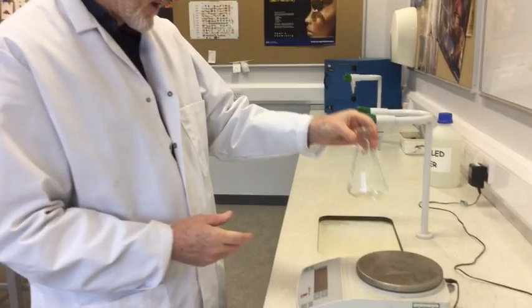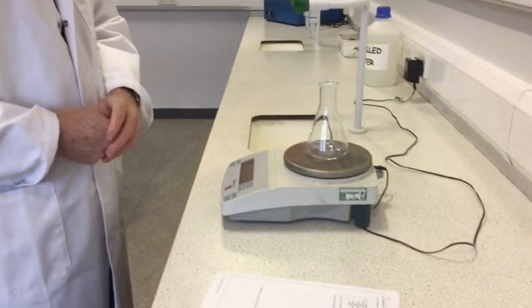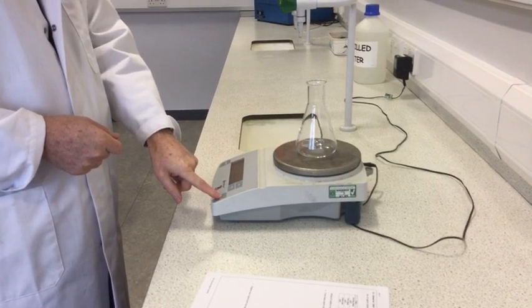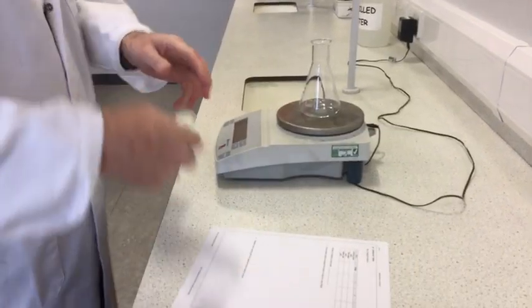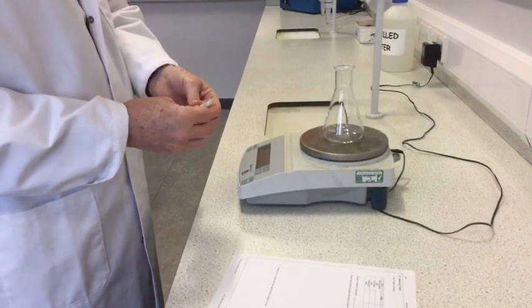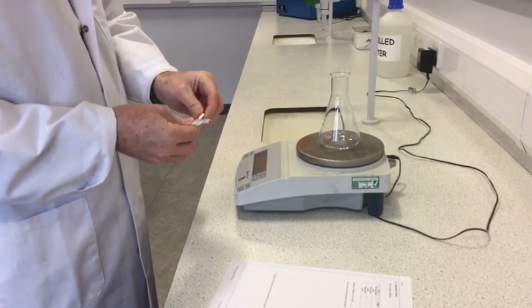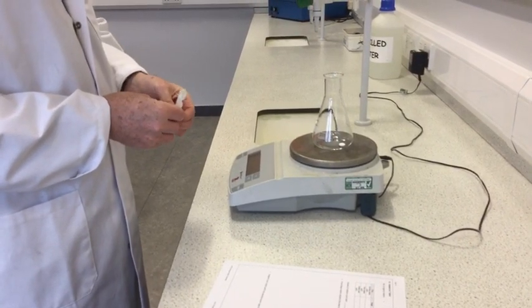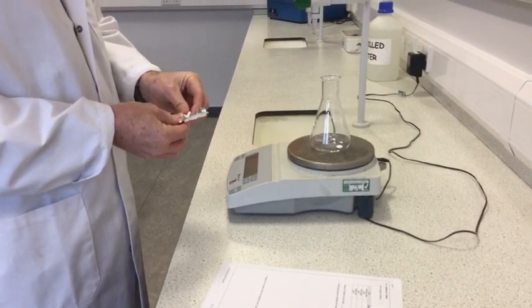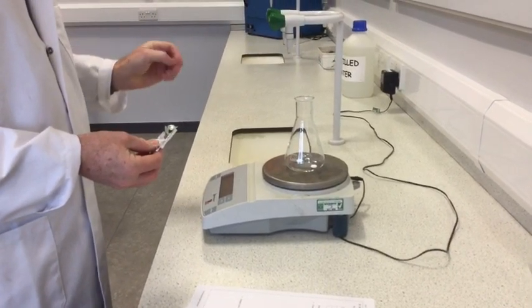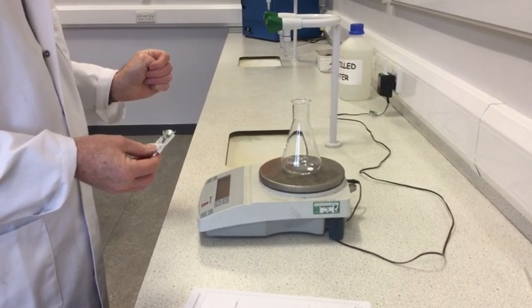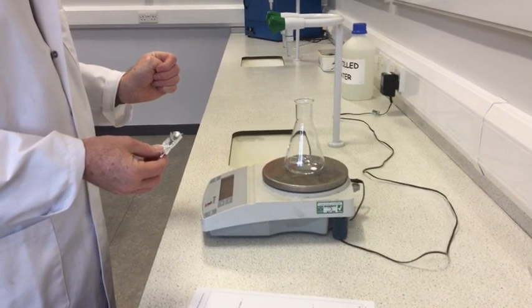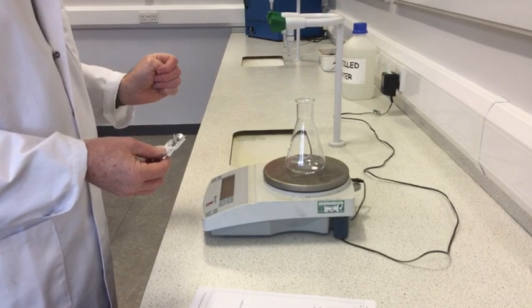So, I get a large conical flask, put it on the balance and tare it. Now, I want to add some aspirin tablets, so I have approximately 1.5 grams. So, one tablet is about 0.6. Two tablets, settling at 1.21 grams.